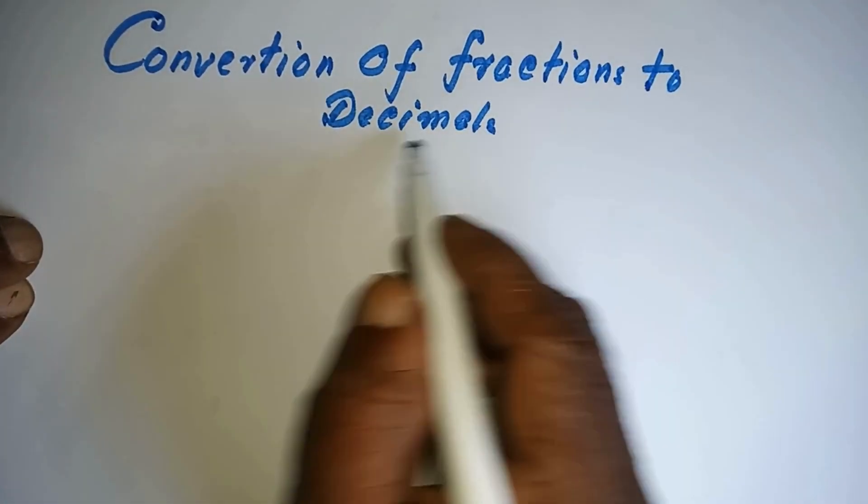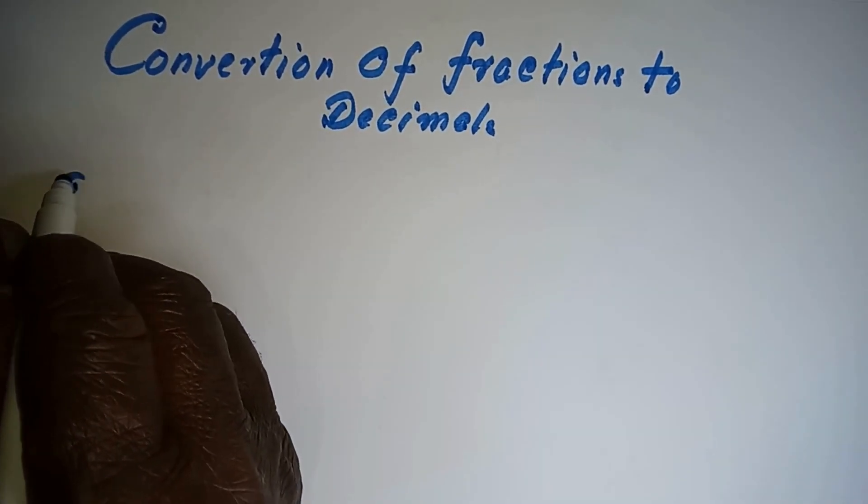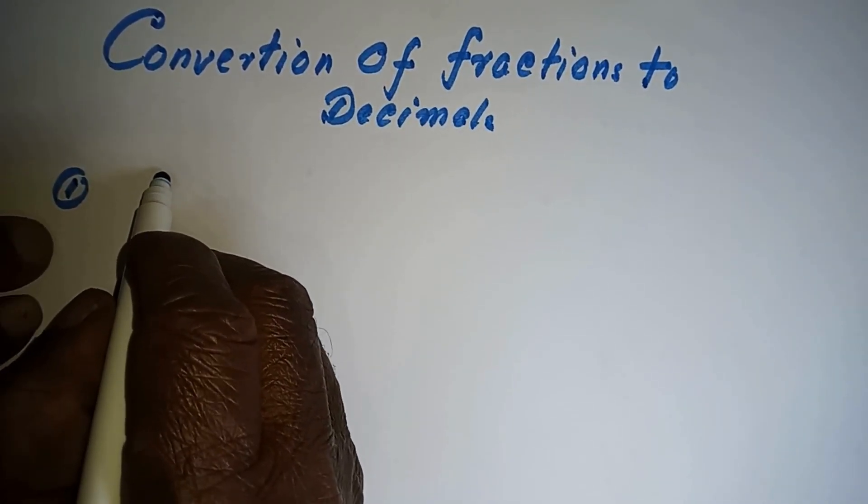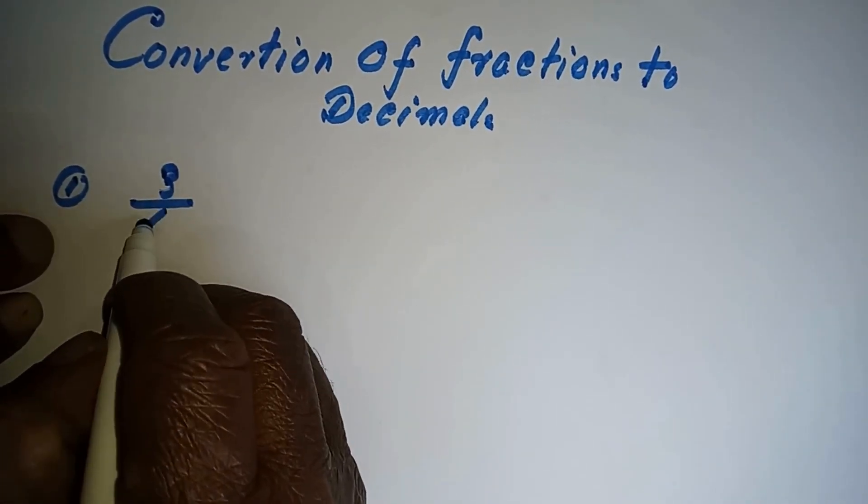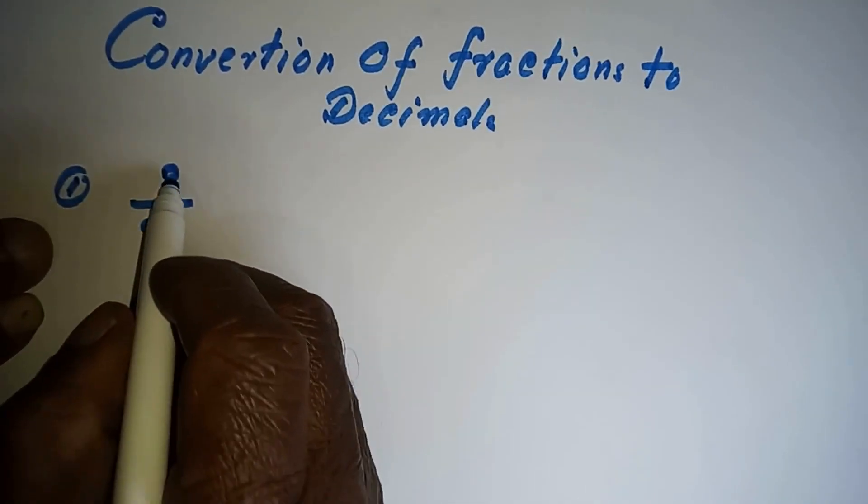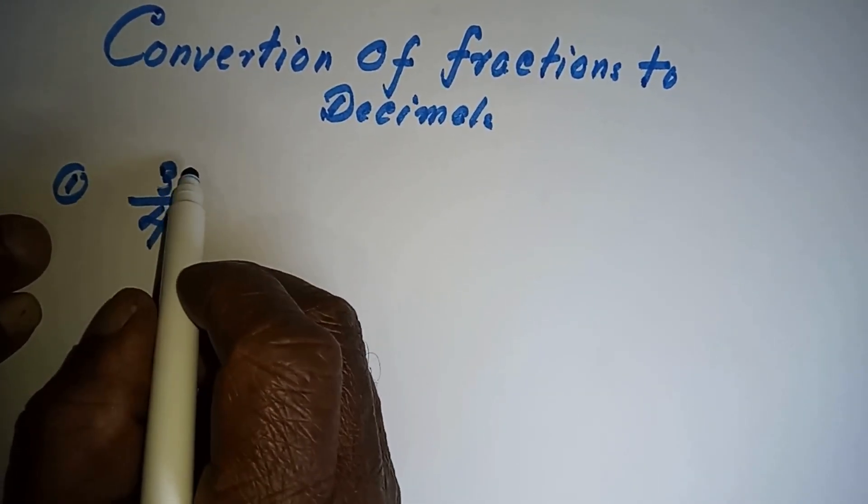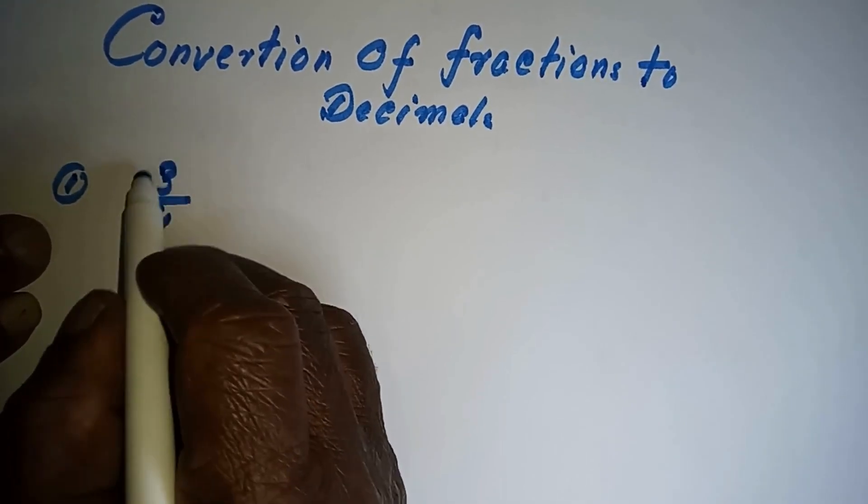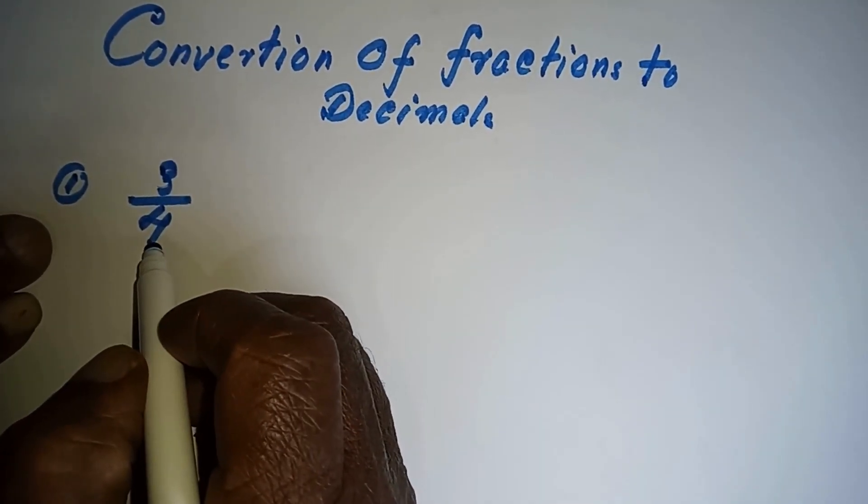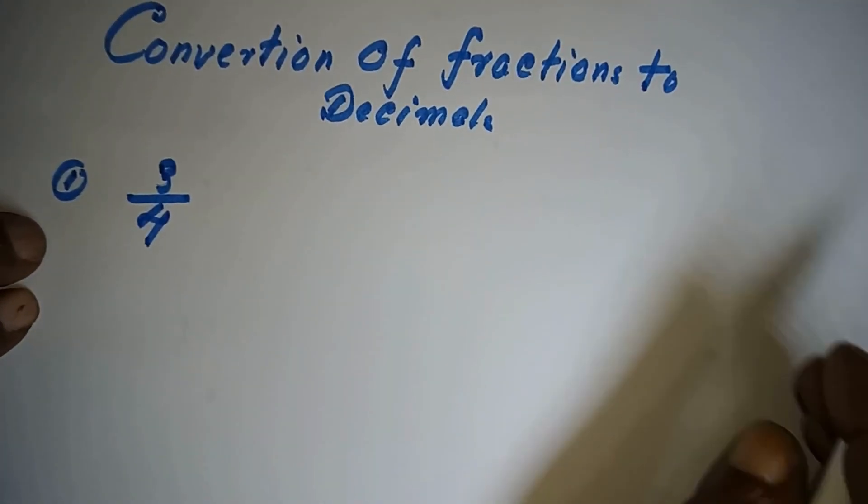Conversion of fractions to decimals. First, we'll take the fraction 3 over 4. Now, to turn this fraction into a decimal, you have to divide the numerator by the denominator. For that, you have to use the long division method.